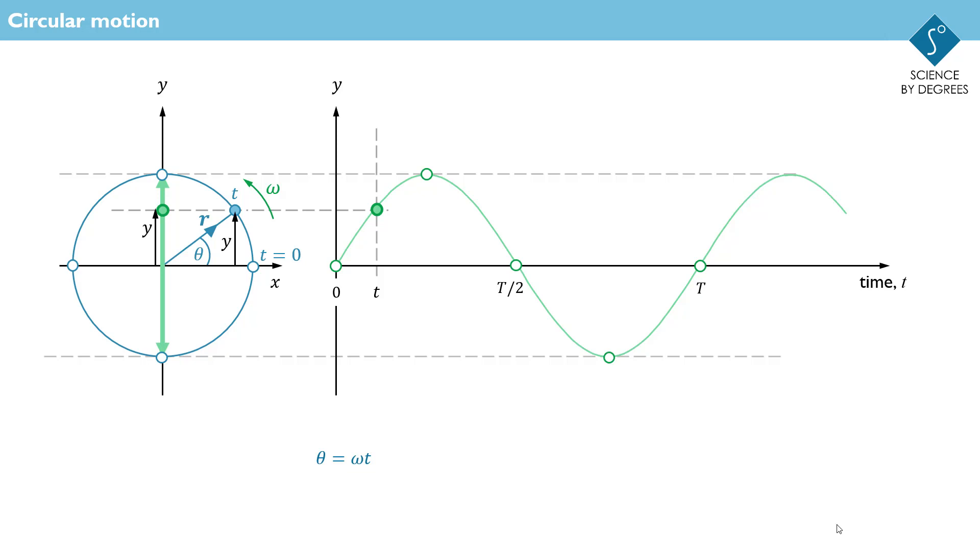Notice that the motion then repeats. So that one period after the time t, the y-displacement is the same. And the phase in this time has changed by 2pi, which is one complete revolution.